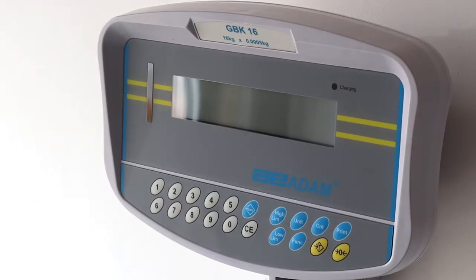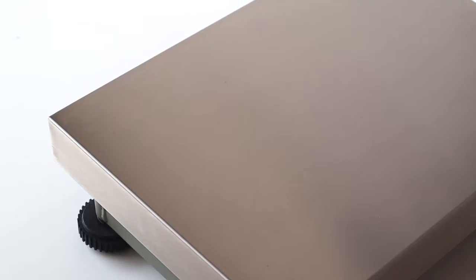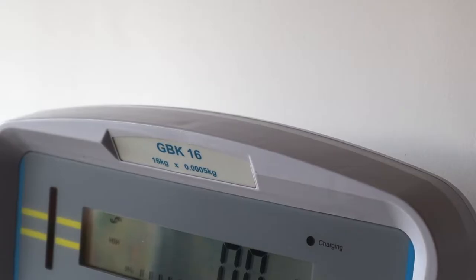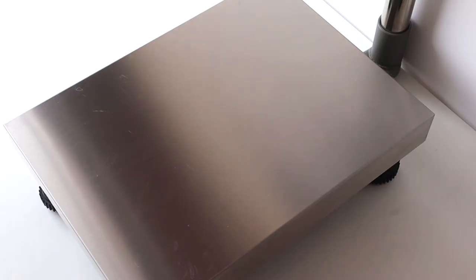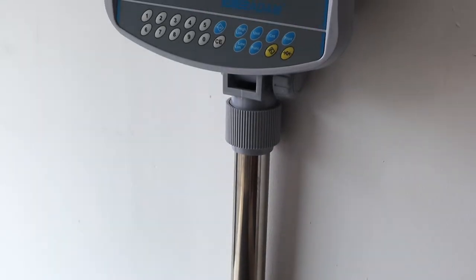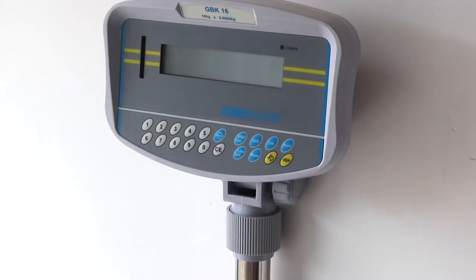This is Adam Equipment's GBK, which can be used as a bench scale or a floor scale. The GBK is a highly dependable check weighing scale with a grade 304 stainless steel pan for easy cleaning and a rugged, adjustable column-mounted indicator.